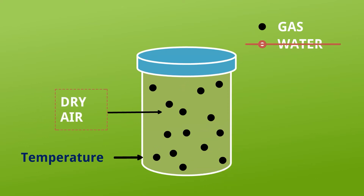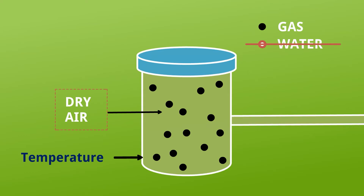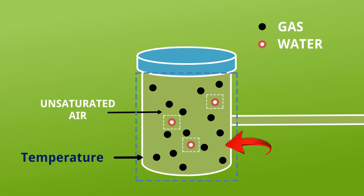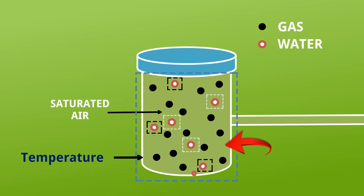If we remove the water, the air will be dry. Now we will connect a pipe and supply moisture. The air absorbs this moisture — we say the air is unsaturated, as it can take more moisture. If we add more moisture, the air again absorbs it. But if we add even more, the air cannot hold it and it precipitates at the bottom — the air is reaching a saturated condition.